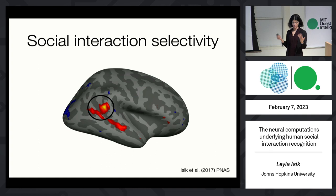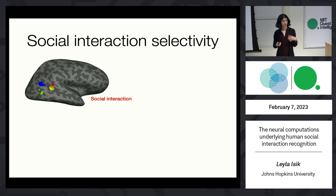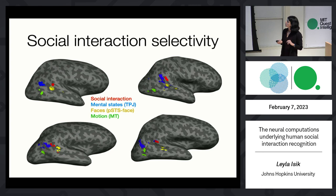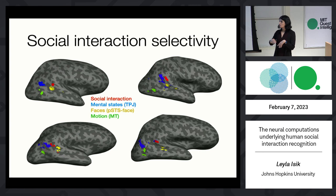We can also localize this region in individual subjects. Here's one subject's brain: the region in red responds more to interaction than independent actions. We asked to what extent it overlaps with other known nearby regions — the RTPJ for mental states, the PSTS for faces, and motion regions. As you can see, while these regions are all nearby, their peaks of activation are anatomically separate. Across multiple subjects there's some inter-subject variability, but for the most part these regions fall in pretty stereotyped locations and are anatomically separate. In follow-up experiments, we also show they have very different functional profiles — the social interaction region responds to social interactions but not really to mental state inference, faces, or motion.